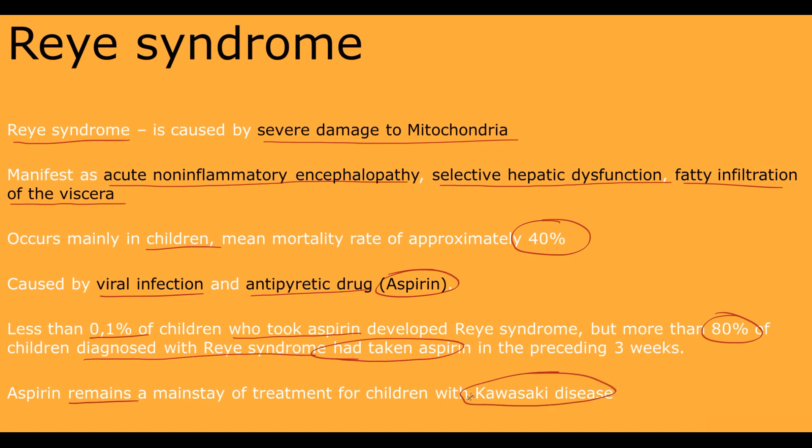Initially, viral infection activates systemic immune response including activation of Kupfer cells. Kupfer cells are liver macrophages that produce pro-inflammatory cytokines as tumor necrosis factor alpha and interleukin-1.